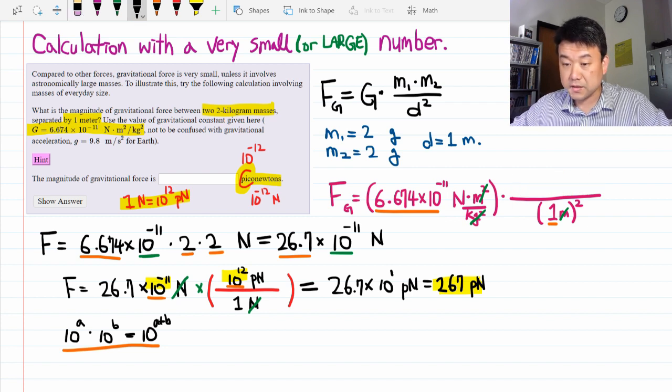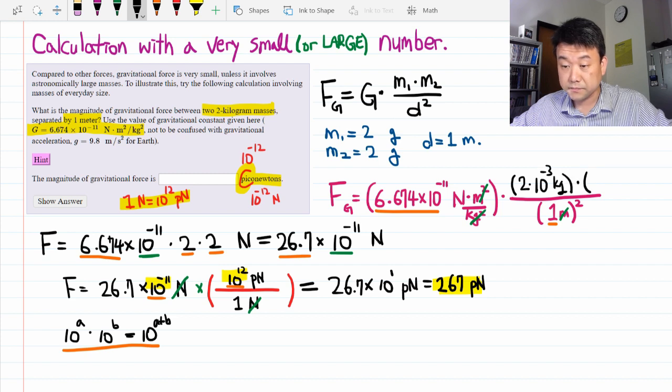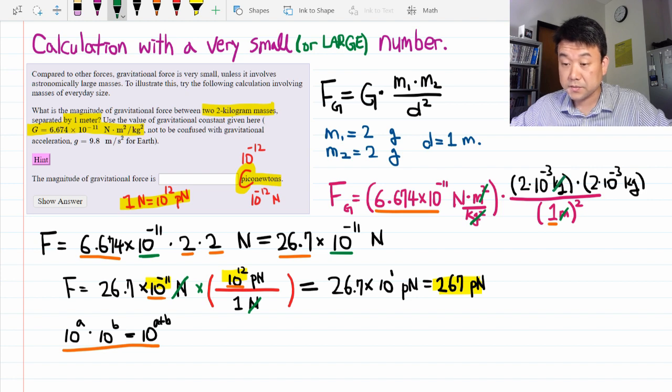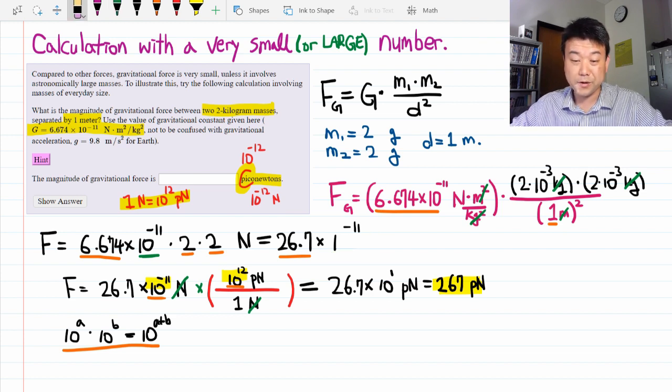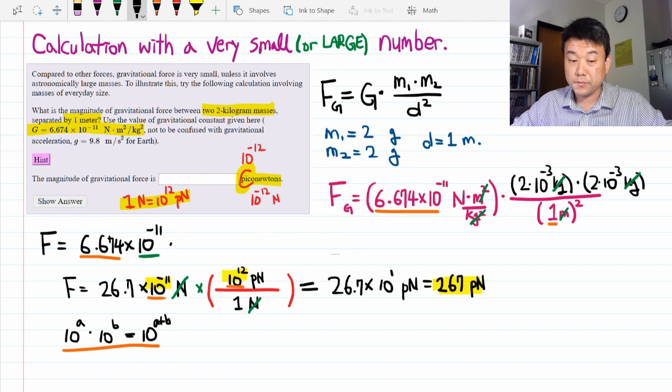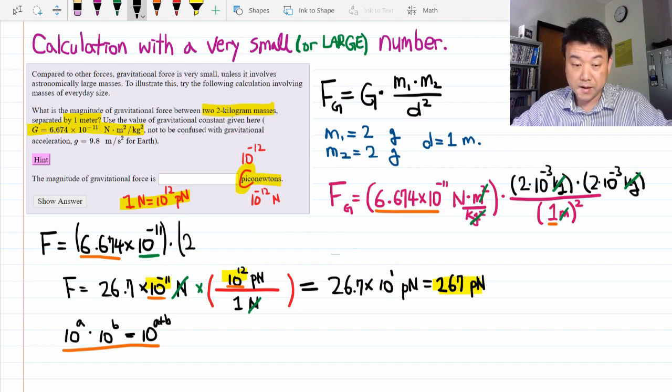So one gram is a thousandth of a gram or 10 to minus 3 kilogram. So this would be 2 times 10 to minus 3 kilogram times 2 times 10 to minus 3. So at least the units cancel out as before because I took care to keep the same unit of mass. And now working out this product will be a little bit more complex. So instead of multiplying by 2 each time, I have multiplying by 10 to minus 3 each time.